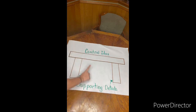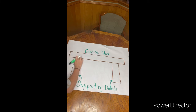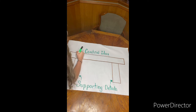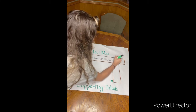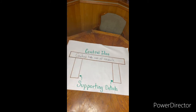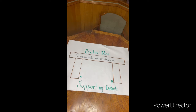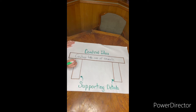So our central idea — go ahead and remind me class, what our central idea was. That's right, cowboys take care of animals. So I'm going to write that very simply right here. Cowboys take care of animals — always end this sentence with a period. Let's go ahead and talk with your partner about what one of the supporting details were. Someone raise their hand and tell me what their partner said. He fed them hay. So we'll say 'feeds animals hay' — I'm going to write this sideways so it fits better. Always end it with a period.